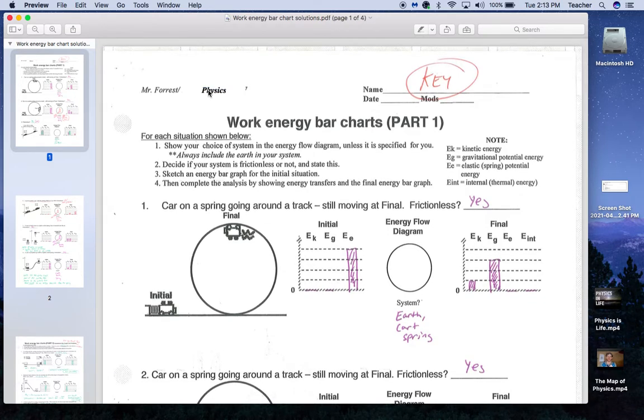Hopefully this will be a reasonable facsimile of what we would do during the Google Meet. So for part one, these things were non-quantitative, meaning we're looking at numbers of bars, but not the exact amount.